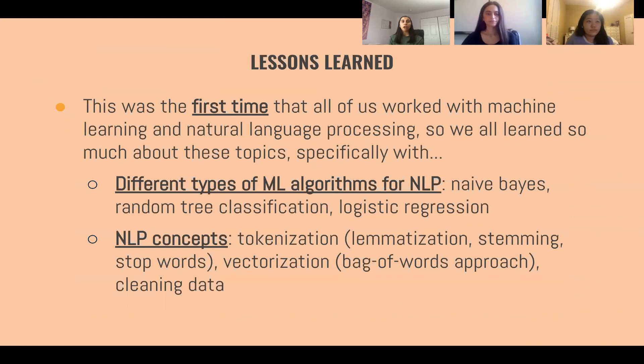So as for lessons learned, throughout this project for all of us, this was the first time that we ever worked with machine learning or natural language processing. So we learned a lot of different topics and concepts throughout the project. For example, the different types of algorithms. So like we said previously, we utilized the three algorithms, naive Bayes, random tree, and logistic regression. Before this project, we honestly had no idea of that all three of those even existed. So, we were able to learn different algorithms and different ways that a machine learning model can actually predict. And we also learned those different concepts such as tokenization, lemmatization, stemming, stop words, vectorization, cleaning the data, and much, much more throughout this project.